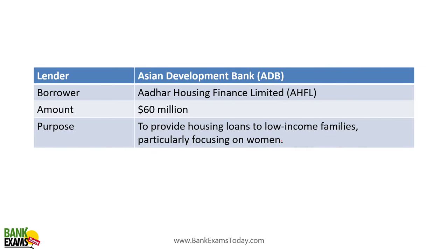Asian Development Bank gave money to Aadhaar Housing Finance Limited — 60 million dollars to provide housing loans to low-income families, particularly focusing on women. So Aadhaar Housing Finance Limited borrowed 60 million dollars from Asian Development Bank.